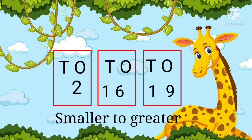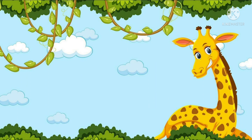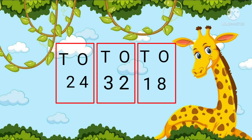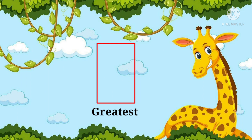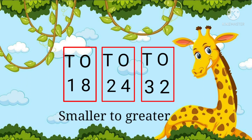So we arrange them as 2, 16, and 19 — from smaller to greater in ascending order. Next is 24, 32, and 18. Since the numbers are double digit, we go to the second rule: checking the numbers in the tens place. Here we find that in all the tens places they are different numbers — 1 is the smallest and 3 is the greatest. So we arrange them from smaller to greater: 18, 24, 32 — in ascending order.